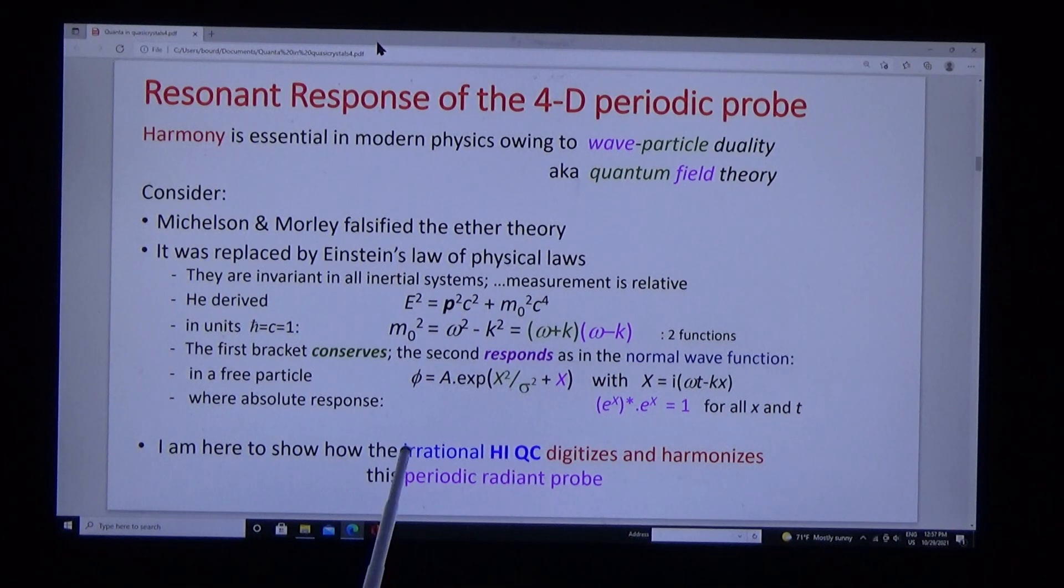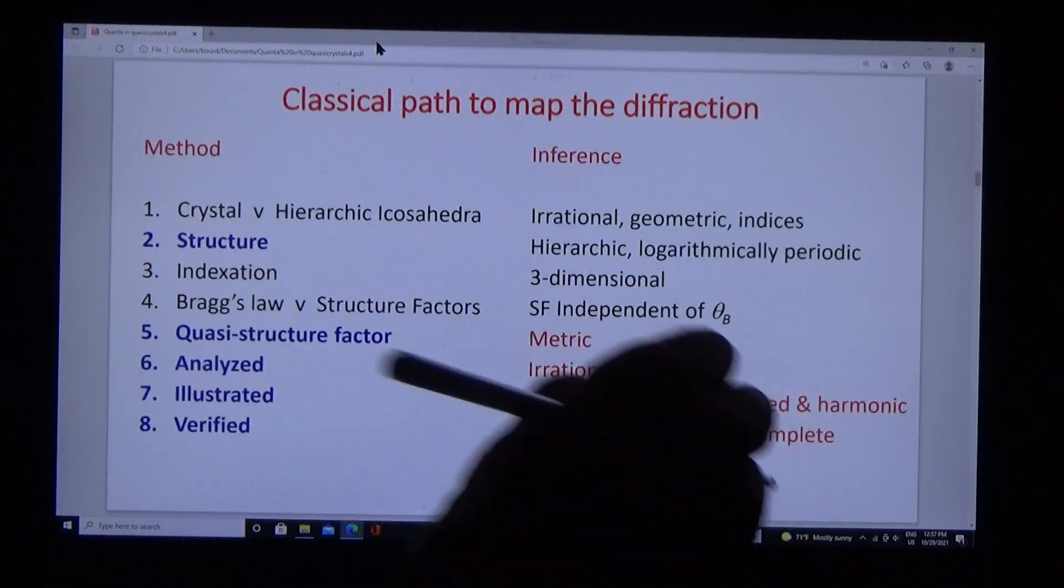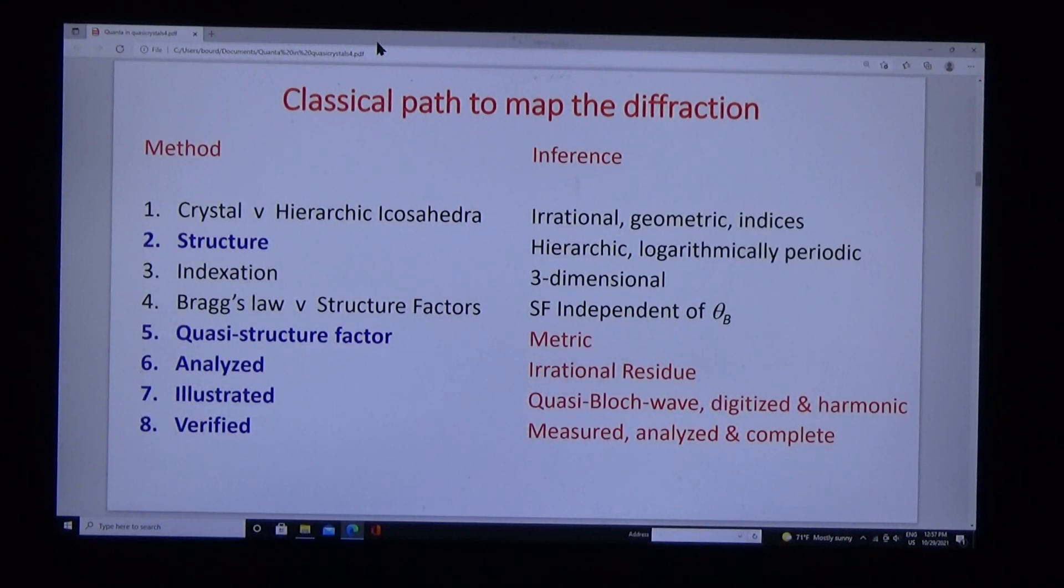The conservative function is an envelope. I'm here to show you how the irrational hierarchical quasi-crystal digitizes and harmonizes this periodic probe. We map out the road ahead: structure, the quasi-structure factor and metric analyzed with the irrational residue, illustrated with the quasi-Bloch wave, verified by measurement and complete.